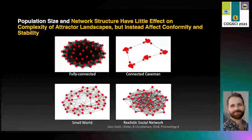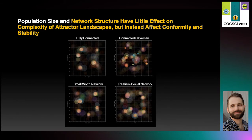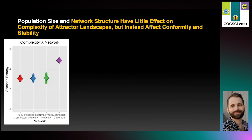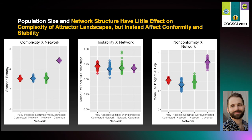Finally, we also explored four different network structures: a fully connected network, a connected caveman network, a small world network, and a realistic social network. In the end state plot, you can see that the connected caveman network in the top right looks very different than the others, with many tight categories. The connected caveman network produces much more complex distributions than the others, but they are all about equally stable over time. We also see much higher non-conformity in the connected caveman network. The clique structure of the network keeps information from diffusing broadly, so each clique tends to be closely aligned within itself, but different category structures appear across cliques, allowing many different categories to be maintained in the population without blending into more diffuse categories.